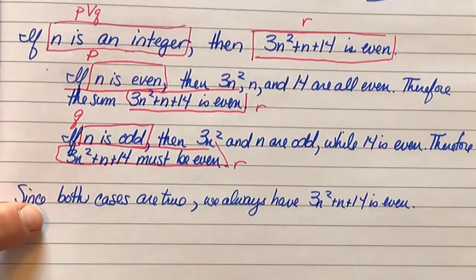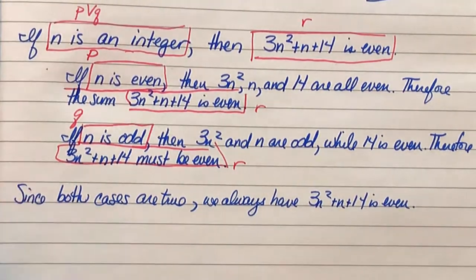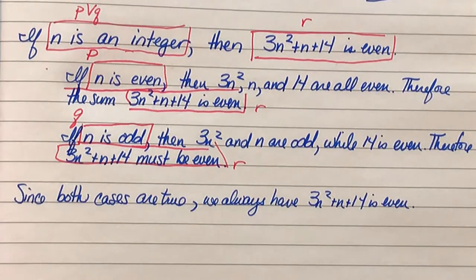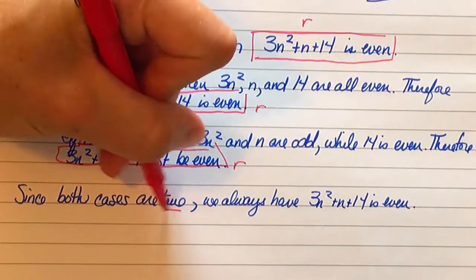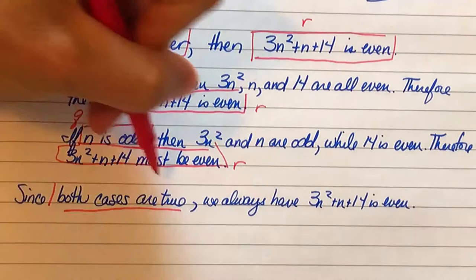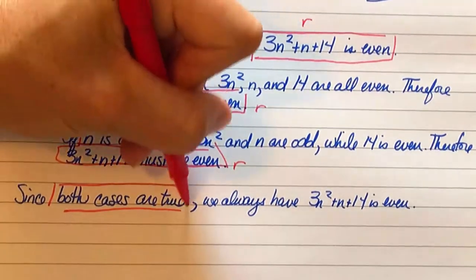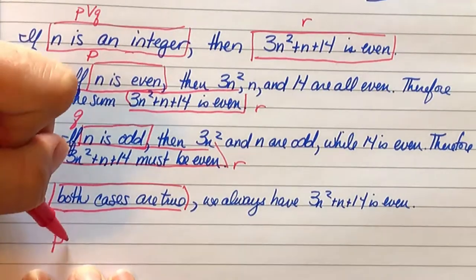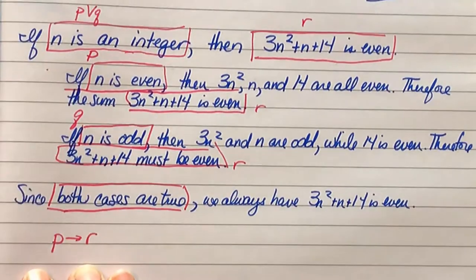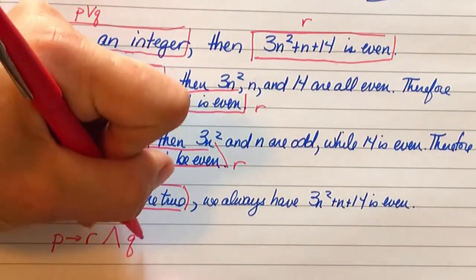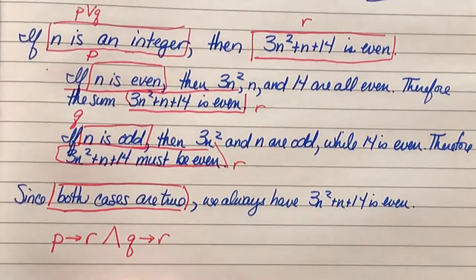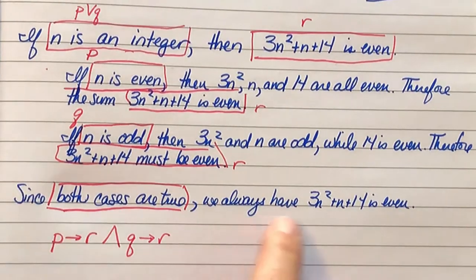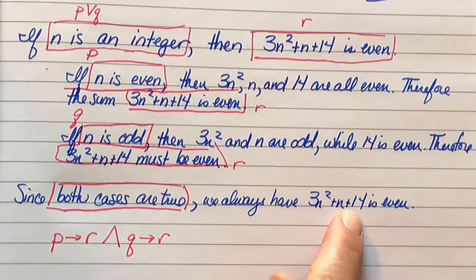Since both cases are true, we always have r. In other words, this right here is the same as saying p implies r and q implies r. And that means that we always have that 3n squared plus n plus 14 is even.